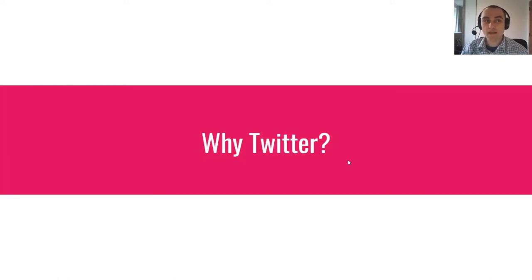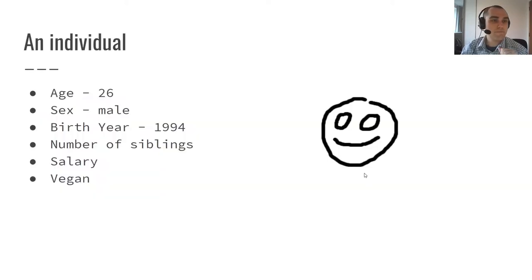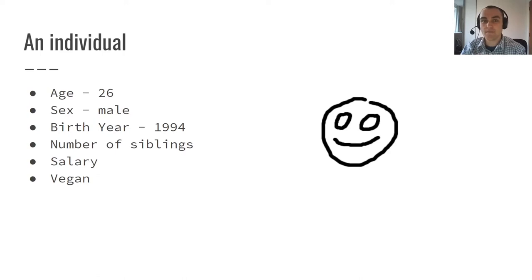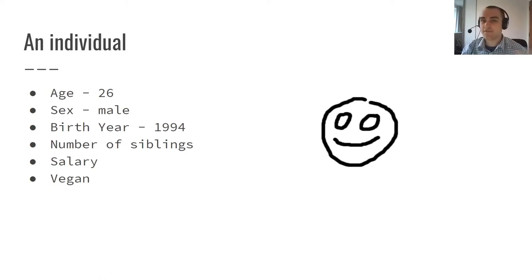Let's talk about why it might be worth our time to scrape social media. When we try to analyze an individual, we usually only have access to what I'm calling their facticity — the set of facts that makes up who they are at a particular time. We're really looking at just an individual snapshot. You might have access to someone's age, sex, family details, salary, and this can tell us what kind of person they are at the time of collection, but that means our analysis can already be dated by the next day.